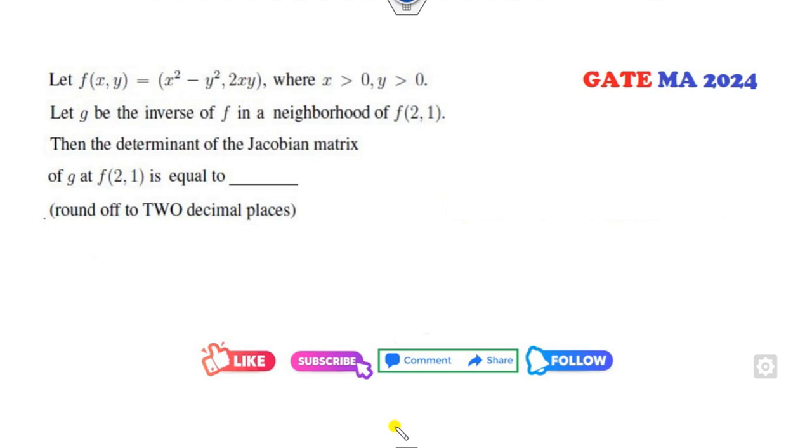So remember, if you read the statement very carefully, what is given to you? G is the inverse of F, that means this is given to you. And your target is to find the determinant of the Jacobian matrix G at this point, fine.